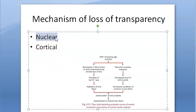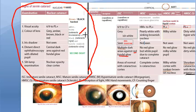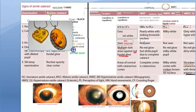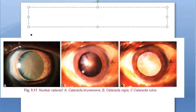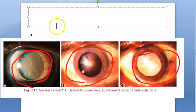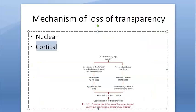In nuclear cataract, there can be deposition of pigments — that is why you see black, red, and other colors. In the nuclear classification: cataracta brunnescens is brown, cataracta nigra is black, cataracta rubra is red. It starts with an amber color — between yellow and orange. Early nuclear cataract looks amber; it then progresses to brown (brunnescens), then black (nigra). Nuclear cataract is always hard.